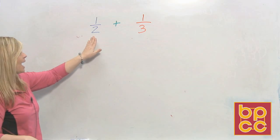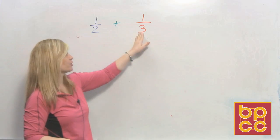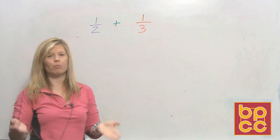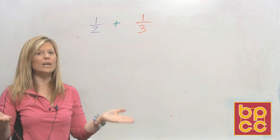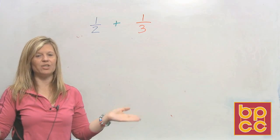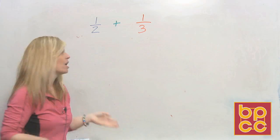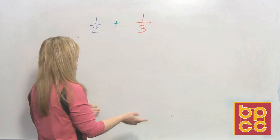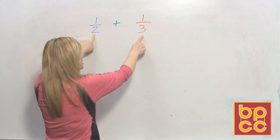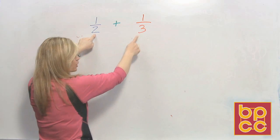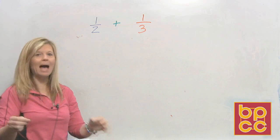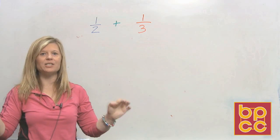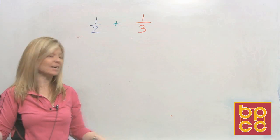If I wanted to add a half plus a third, the problem is we cannot add these fractions right now. They are not alike. These denominators are different numbers, which means they're cut into different size pieces.